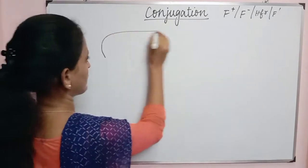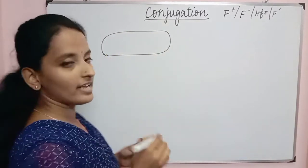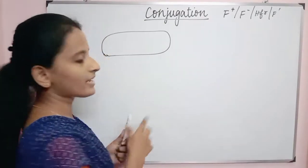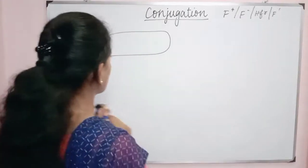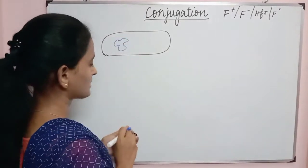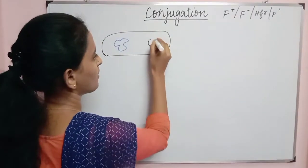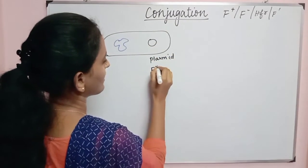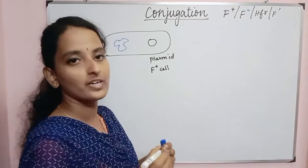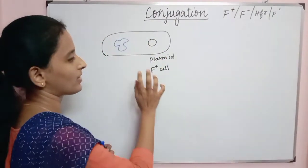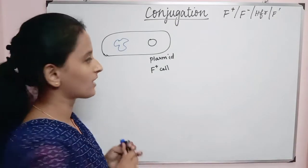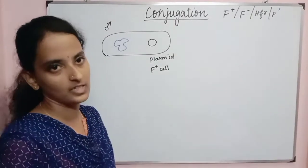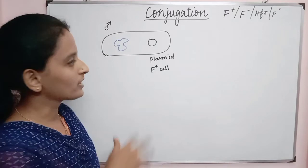A bacterium contains chromosomal DNA and also a plasmid. Some particular bacteria only contain the plasmid — that particular bacteria is called the F+ cell. F stands for fertility. So a bacterium that contains both chromosomal DNA and an F plasmid is called an F+ cell, and it is also called a male bacterium.